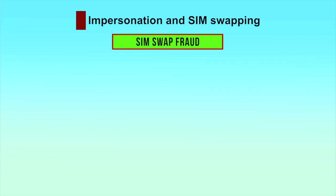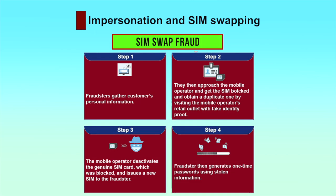SIM swapping occurs when fraudsters first collect the user's information and use it to get his mobile phone SIM card blocked and obtain a duplicate one by visiting the mobile operator's retail outlet with fake identity proof. The mobile operator deactivates the genuine SIM card which was blocked and issues a new SIM to the fraudster, who then generates one-time passwords using stolen information.